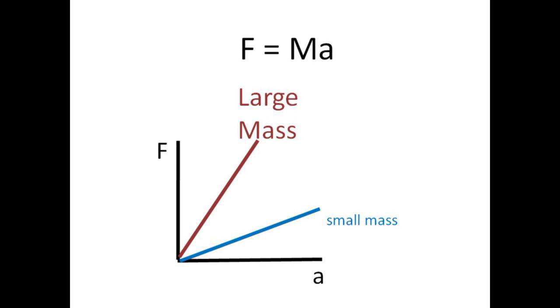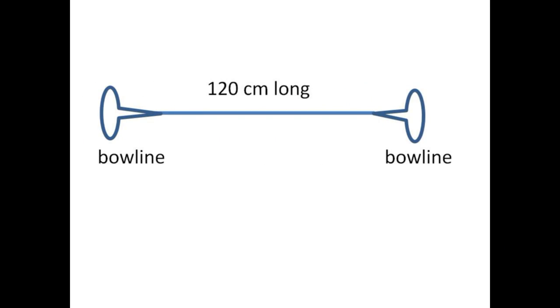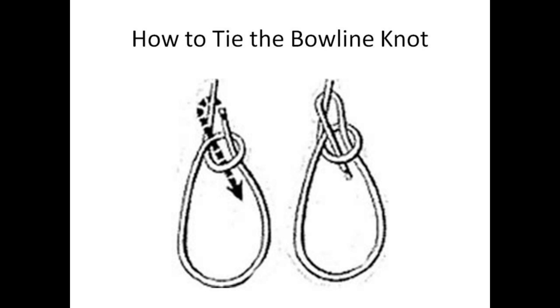The mass of the cart and sensor is determined by setting it on its back upon the digital scale. Please note that the scale reads grams and you need kilograms. The accelerating string should be approximately 120 centimeters long and have a bowline knot loop at each end, one end to attach to the force sensor hook and the other end to the accelerating mass hook. Here is the bowline knot for those who failed to thrive in either Pathfinders or any other paramilitary group.